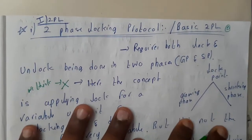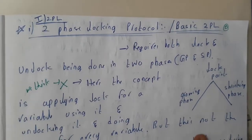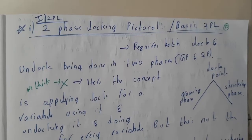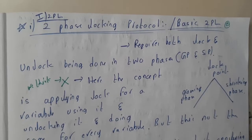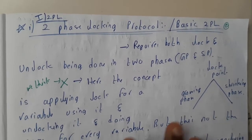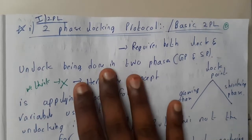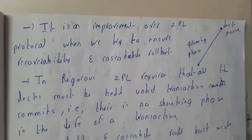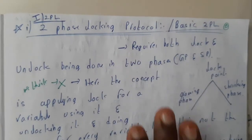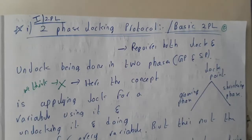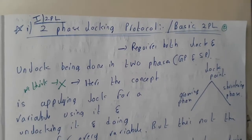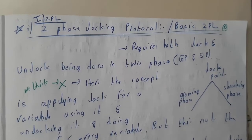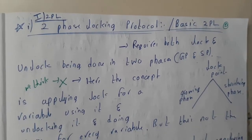In the next tutorial we'll go through the two-phase locking mechanism, which is a subtopic of this locking mechanism. Two-phase locking can be achieved in three ways. We'll start with the first: the two-phase locking protocol, also called basic 2PL.